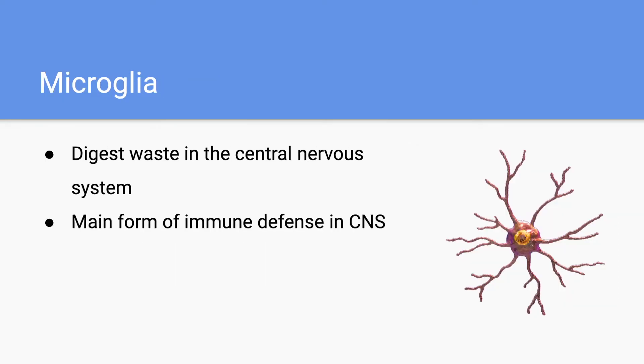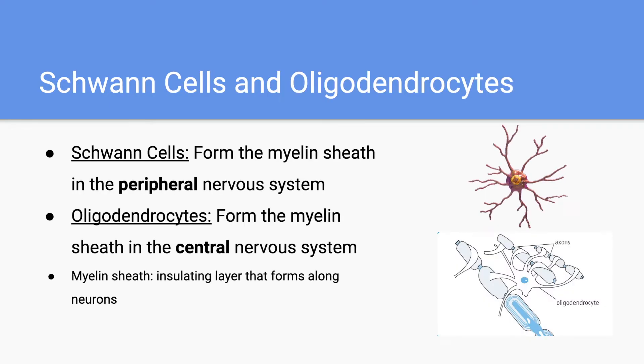Next, we have microglia, which digests waste in the central nervous system. Microglia are essential because they're the main form of immune defense in the central nervous system.